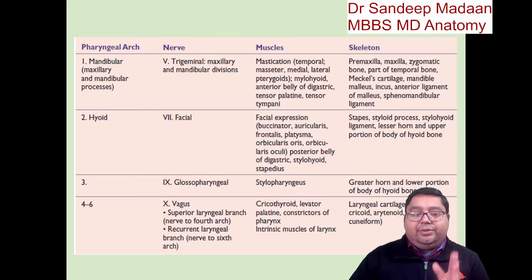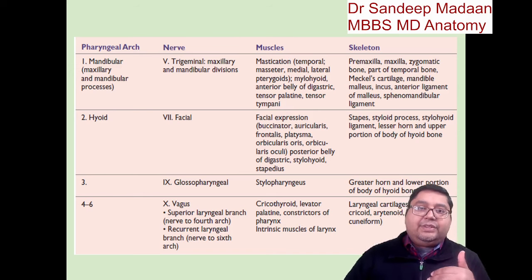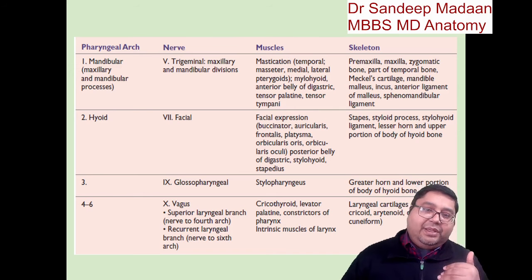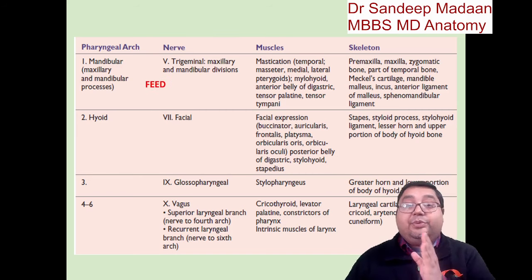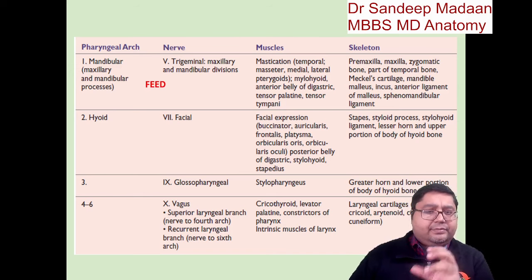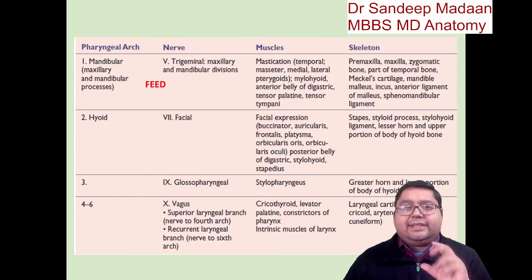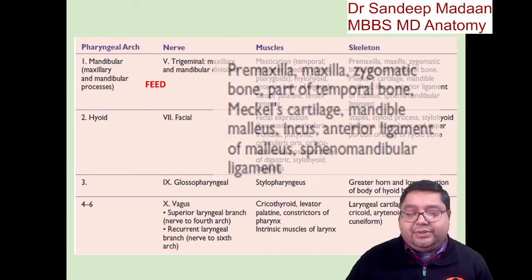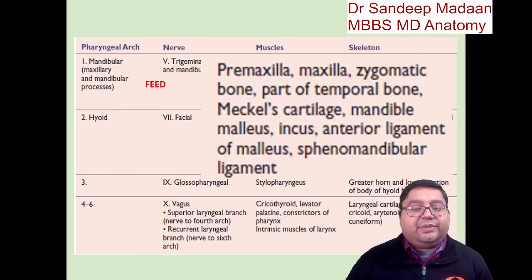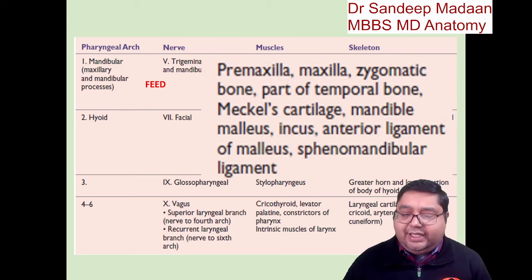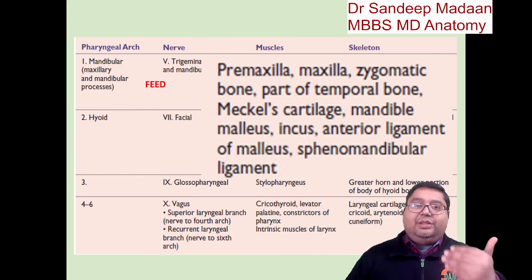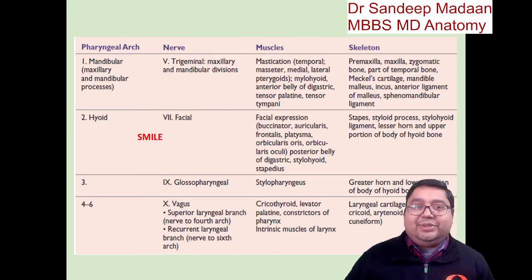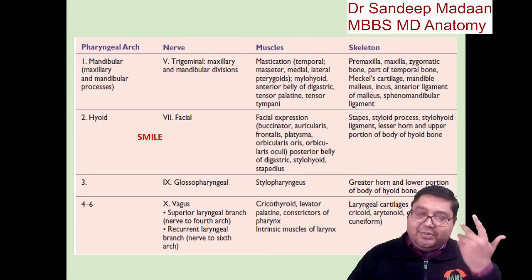Now let us look at the pharyngeal arches in sequence following how the baby grows. When the baby is very small, what will he do? He will feed. So the first arch is related to feeding — the skeletal elements are concerned with mastication. After feeding, when the baby grows up, what will he do? He will smile. So the second arch means smile — it is concerned with facial expression.